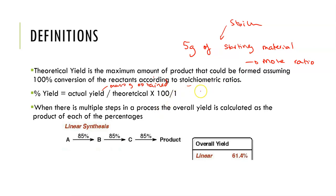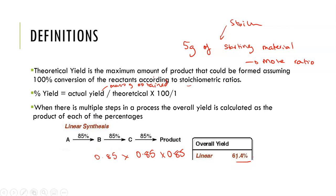You should be familiar with doing these calculations already. The thing to consider when we talk about pathways, however, is that when there are multiple steps in a process, the overall yield is calculated as the product of each of the percentages. So if I have a multi-step process occurring in three stages and each stage occurs at 85%, I take 0.85 × 0.85 × 0.85, and my overall yield will be 61.4%. That is the maximum I could hope to attain from a three-stage process with 85% yield at each stage. So when we consider a pathway we also need to consider the efficiency and the yield at each stage in assessing whether it is the best pathway.